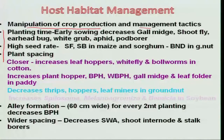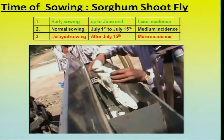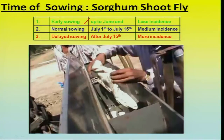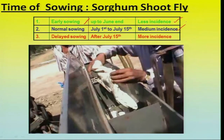Some insects have high incidence in the early stage of the crop, while others have high incidence in the late stage. For example, sowing time in sorghum — the shoot fly is an economically important insect in dryland situations, causing economic damage in the form of dead heart, killing the whole plant. With early sowing up to the end of June, there is very low incidence. Normal sowing between July 1st to 15th records medium incidence of around 10 to 20 percent dead heart, while delayed sowing after July causes maximum damage of more than 30 percent incidence.